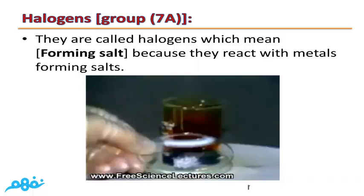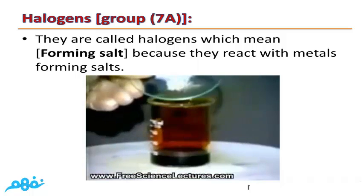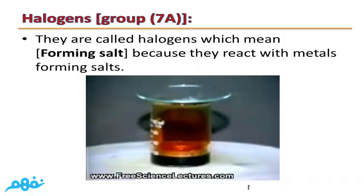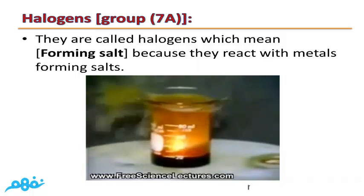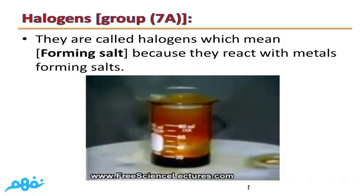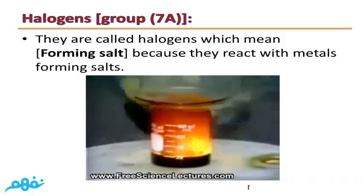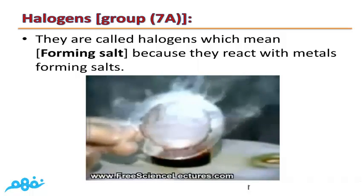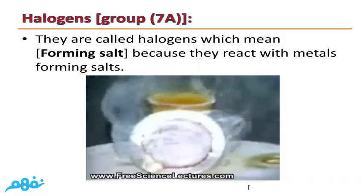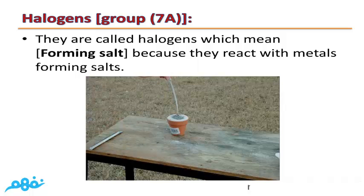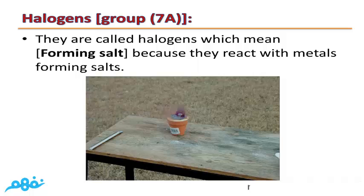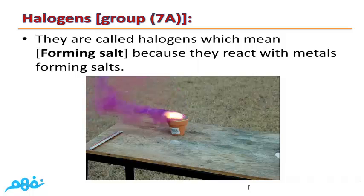With liquid bromine, adding Sodium or any metal will form salt. Group 7A are called halogens because they react with metals forming salt. The reaction of Iodine with any metal, such as Sodium or Potassium, also forms salt — in the case of Sodium, Sodium Iodide is formed; in the case of Potassium, Potassium Iodide is formed.